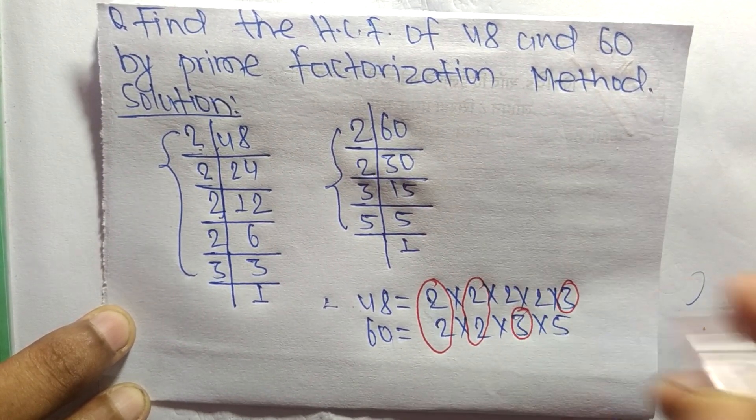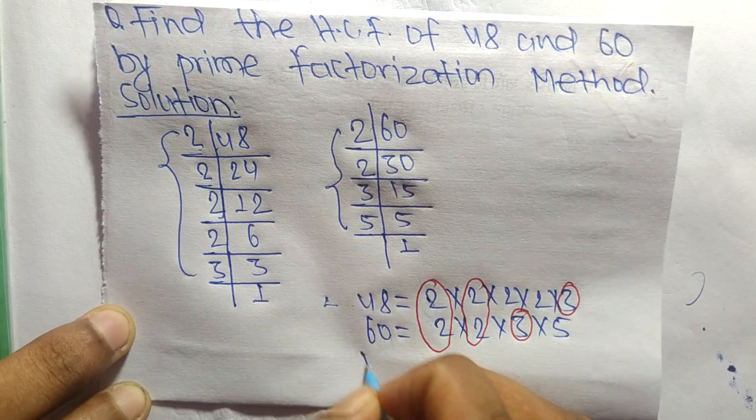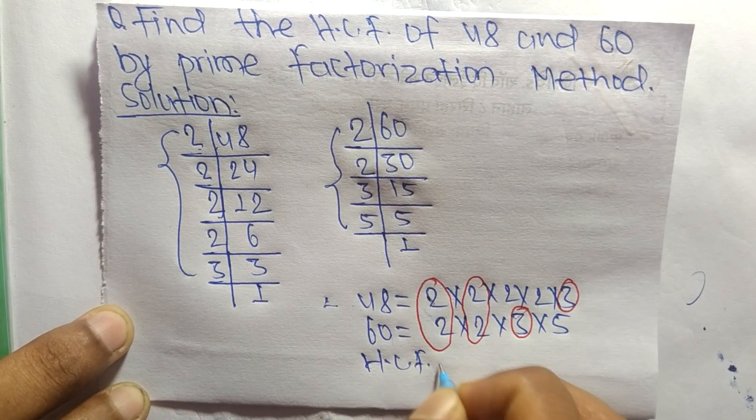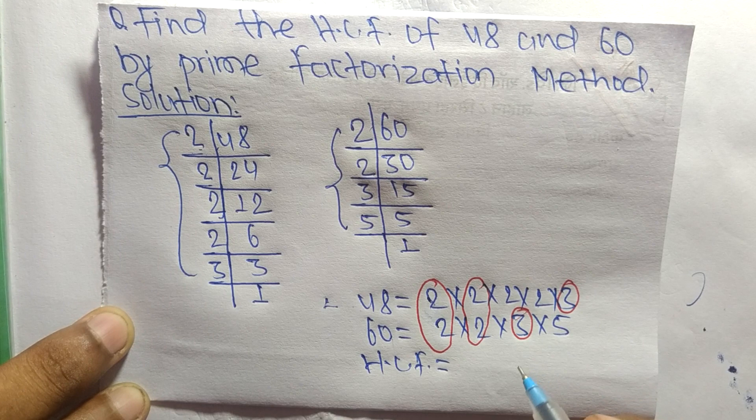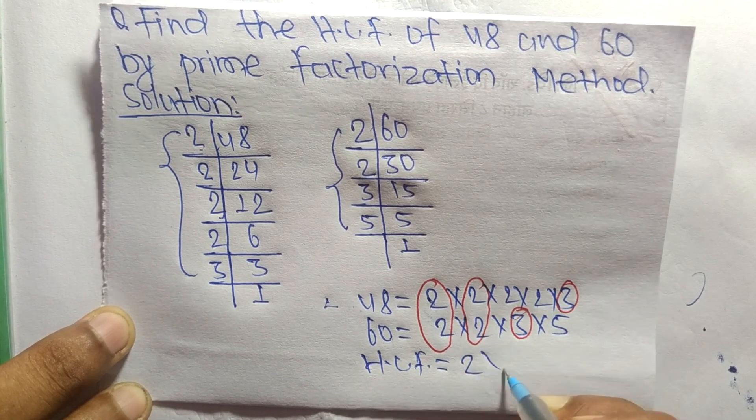So the HCF is equal to the product of common factors, which are 2, 2, and 3.